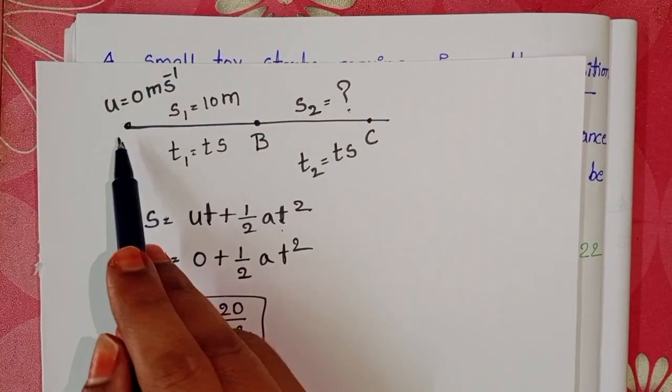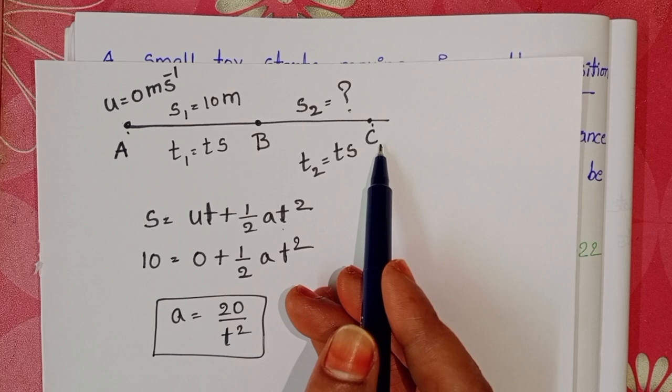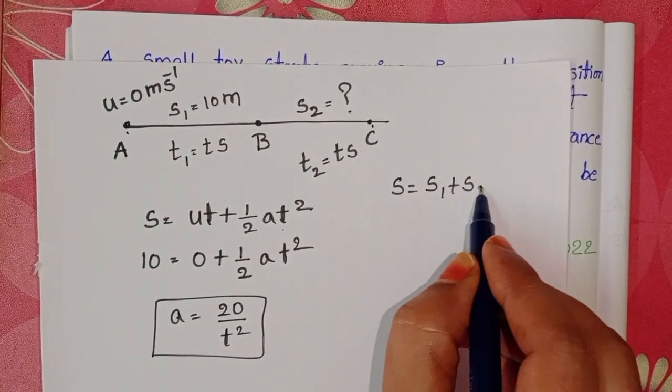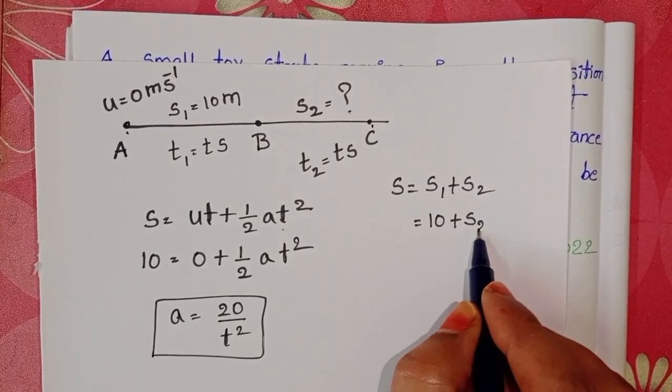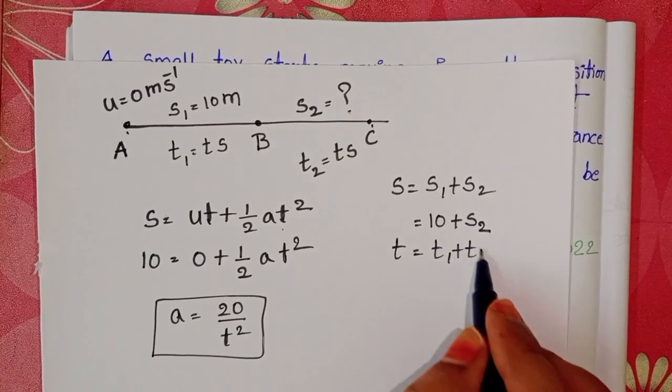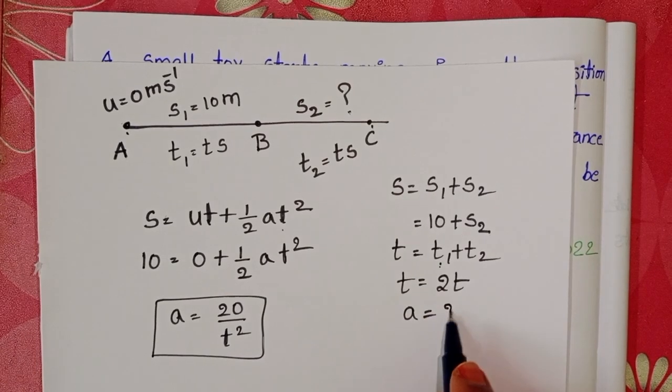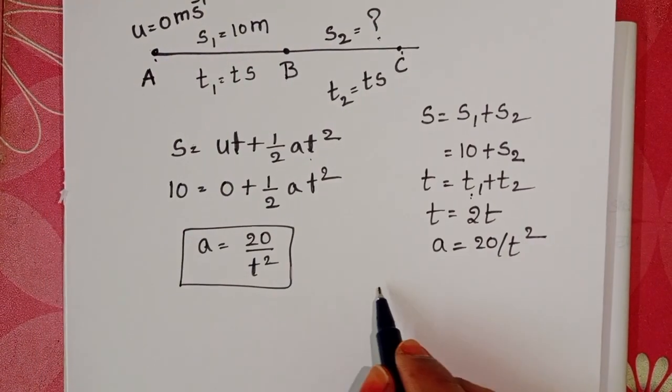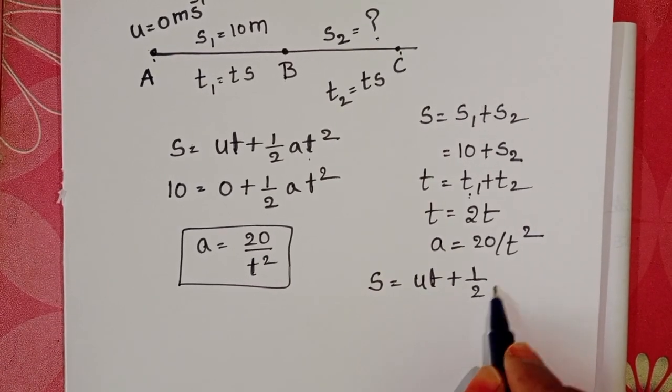Again, take initial position A and final position is C. In between A and C, total distance S equals S1 plus S2. S1 is 10 meters and S2 is unknown. Total time equals T1 plus T2, 2t seconds. And here acceleration is 20 by t-square. Take again, equations of motion S equals ut plus half a t-square.